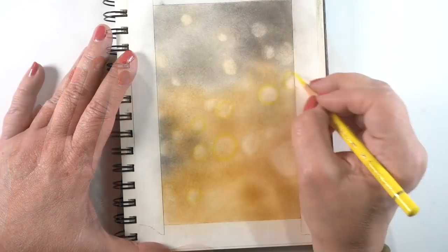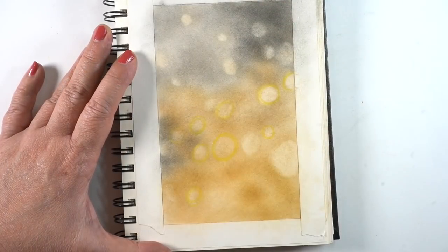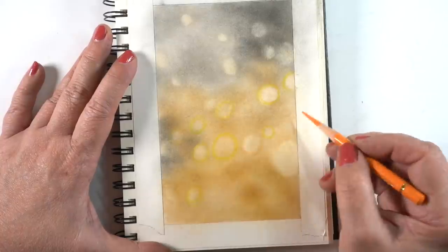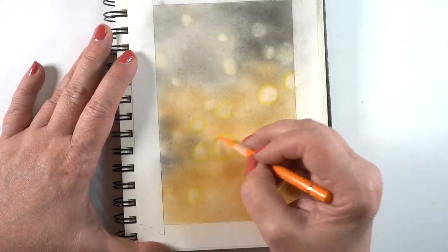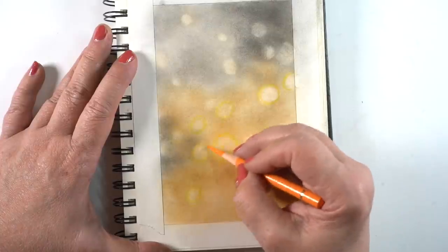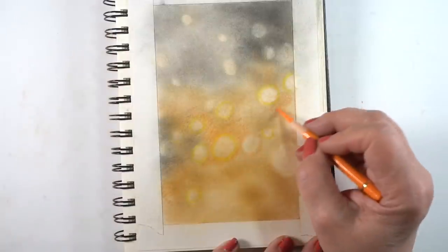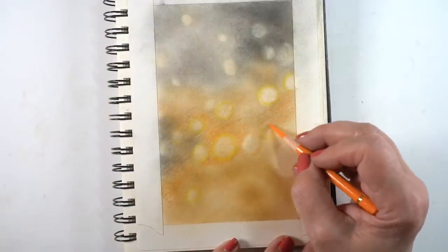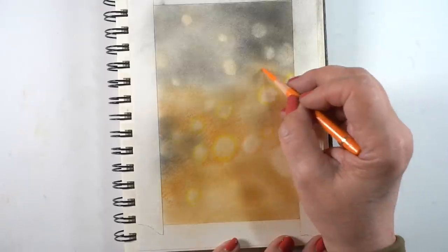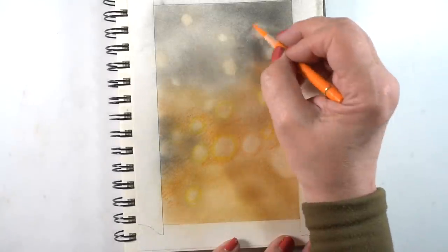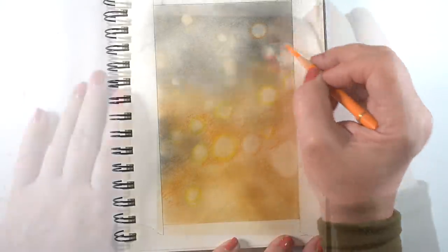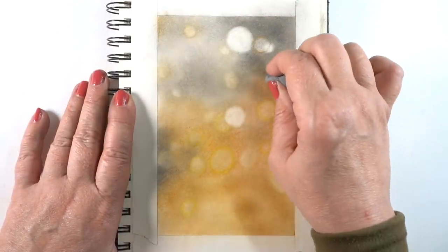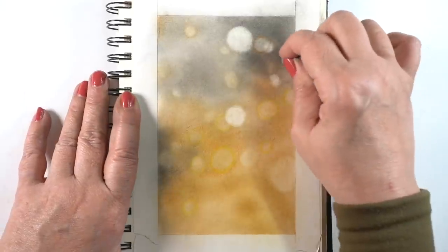The bokeh backgrounds that you see in beautiful photographs have many layers of colors. Sometimes it's different, incredibly intense colors, lots of different things you can try with it. So just Google for bokeh effect, and you will see tons of amazing samples that you can follow for your own art. I decided to try to add a little more intense color. So I'm using my yellow golds and my gold pencils in order to add pigment directly on the paper. And then I also did some blending with the cotton ball in between.